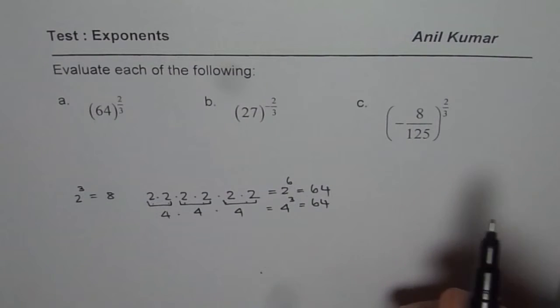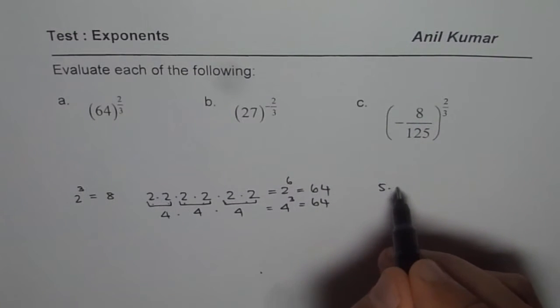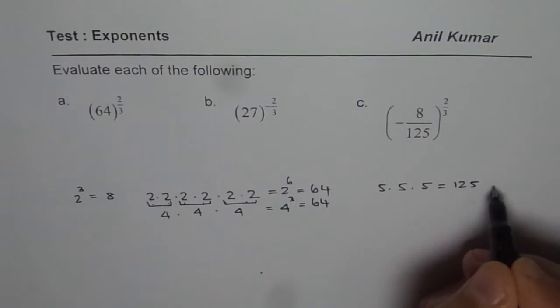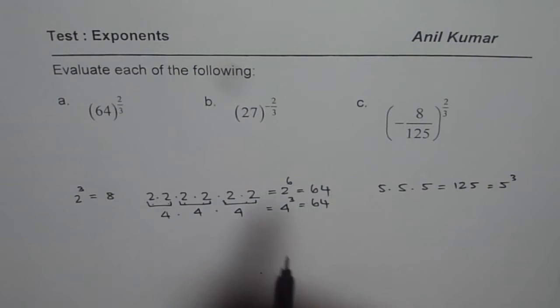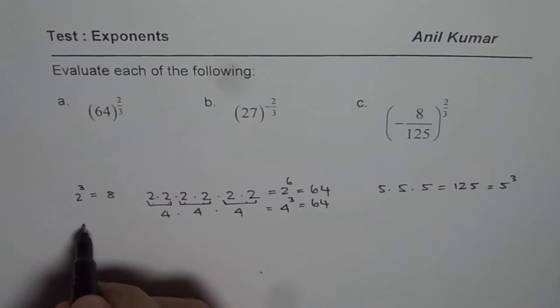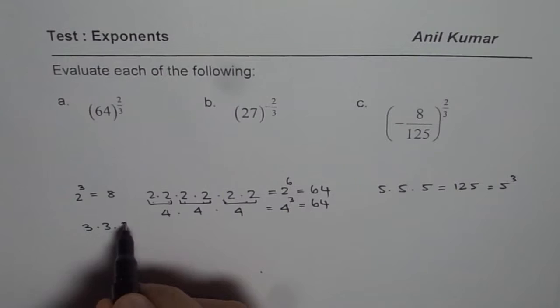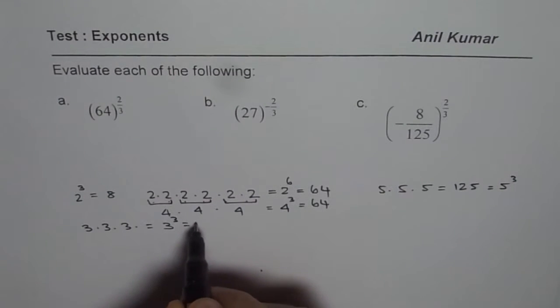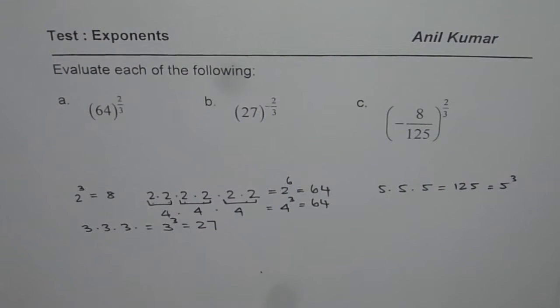Let us understand 125. 5 times 5 is 25. 25 times 5 is 125. So 125 is 5 cubed. We have a number 27 here, which is 3 times 3 is 9, 9 times 3 is 27. So that is 3 cubed. These are the numbers we are working with.